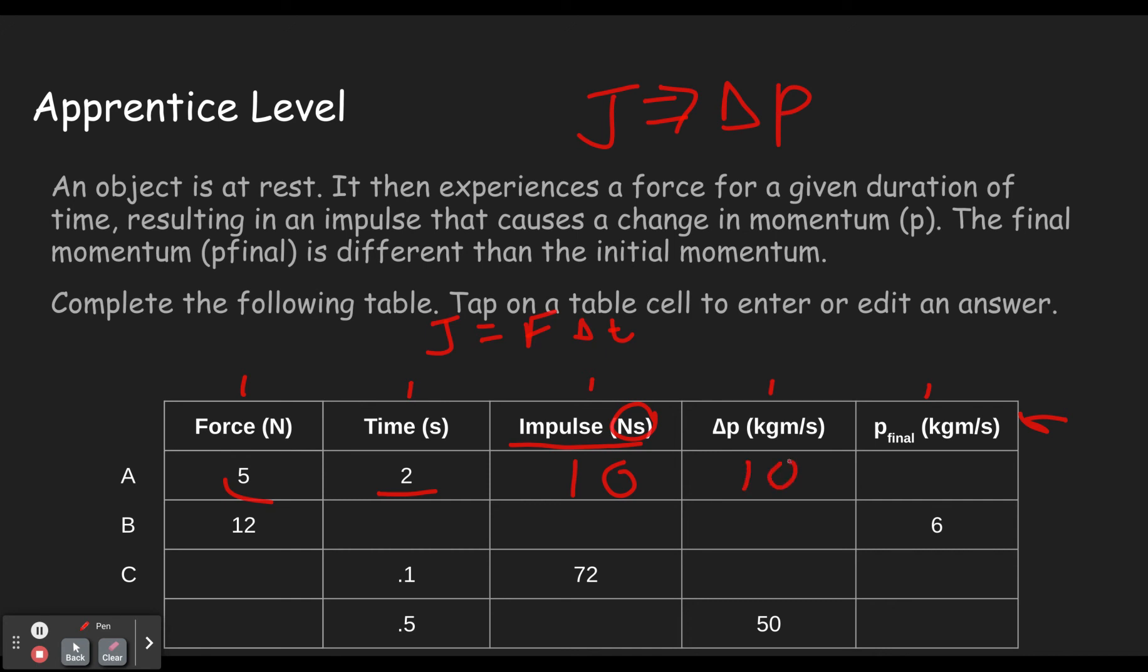Impulse and change in momentum will always be the same, because the impulse is causing the change in momentum. Ten units of impulse causes ten units of change of momentum. If the object changed by ten units of momentum, and it started out with zero, well then it's going to end up with ten as the final velocity.